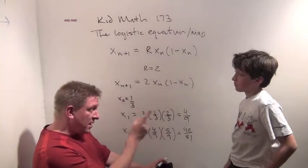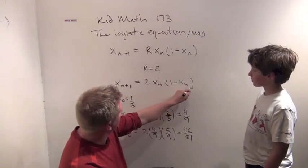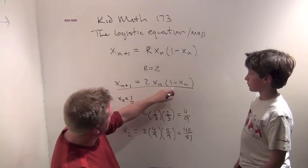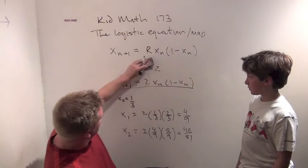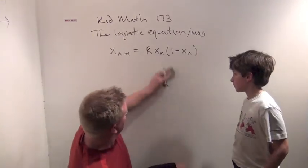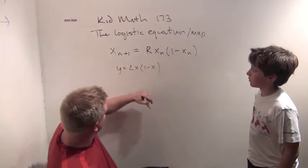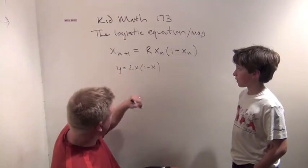So the interesting connection, and we'll talk more about this over the course of this week, I'll stick with this equation, 2 times x times 1 minus x. If I wanted to graph an equation like this, y equals 2 times x times 1 minus x.